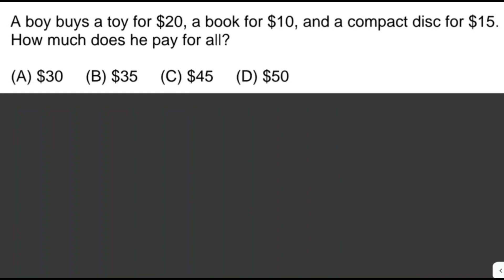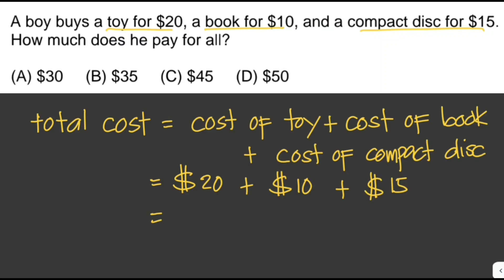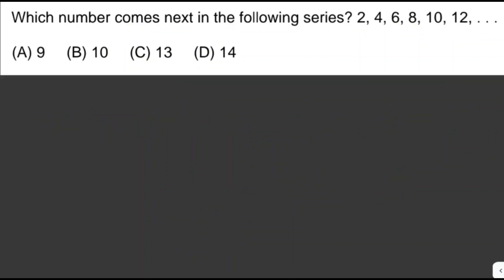A boy buys a toy for twenty dollars, a book for ten dollars, and a compact disc for fifteen dollars. How much does he pay for all? We just add up all the costs: twenty dollars plus ten dollars plus fifteen dollars, which equals forty-five dollars in all. The answer is letter C.